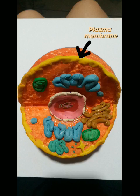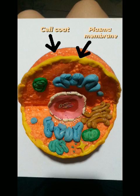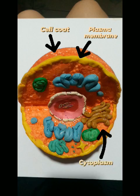Plasma membrane provides protection for a cell. Cell coat — protecting the plasma membrane and participating in the filtration and diffusion process. Cytoplasm — cell expansion, growth, and replication are carried out in the cytoplasm of a cell.